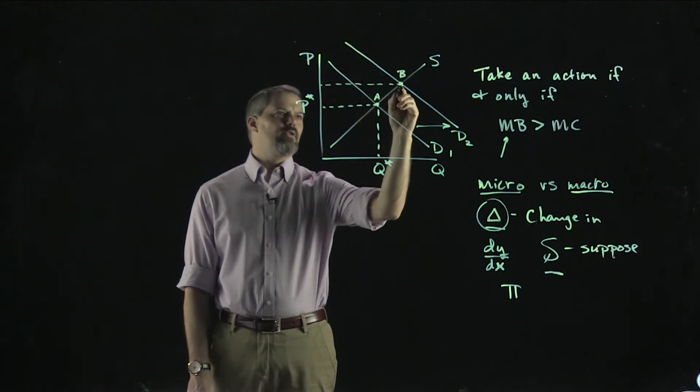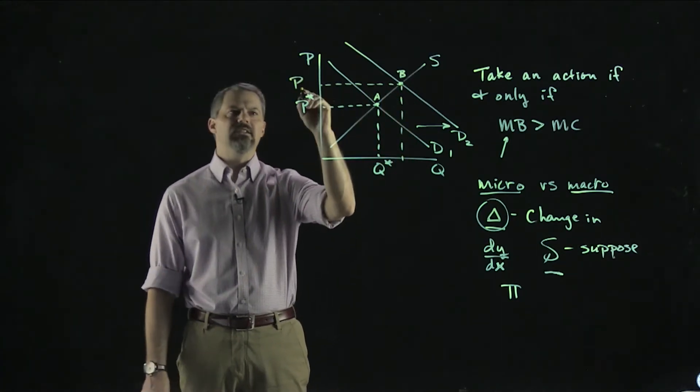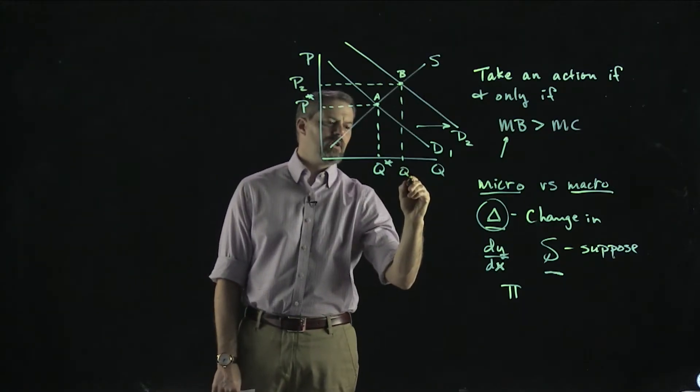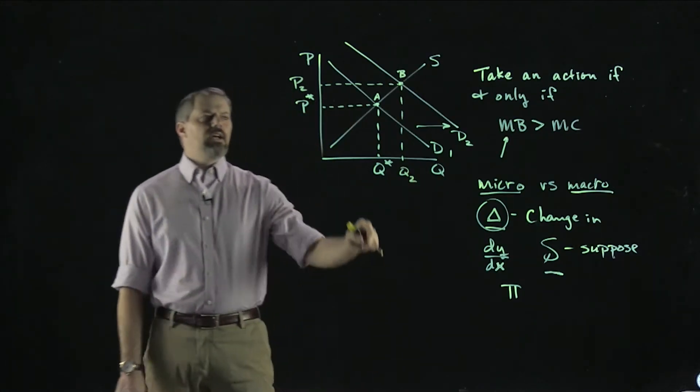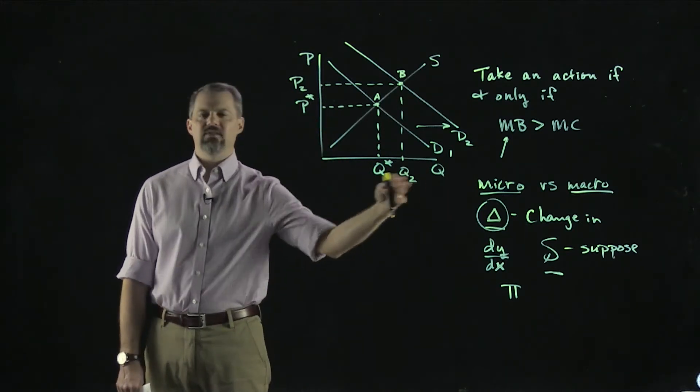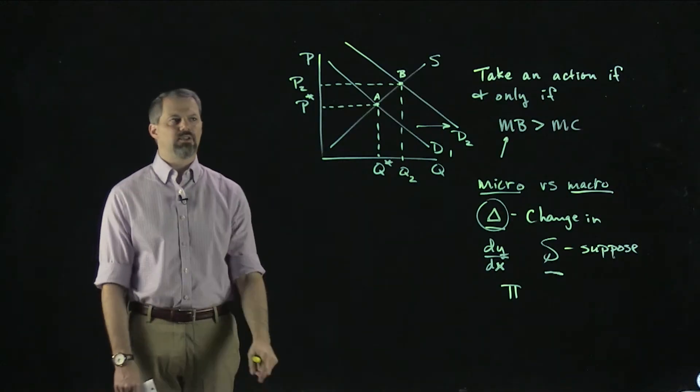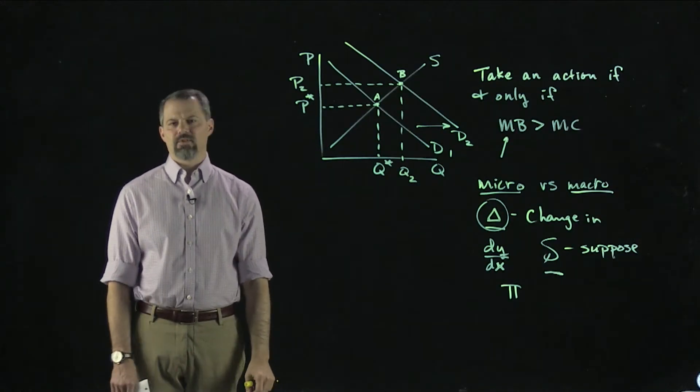That brings us from this initial equilibrium, which we could call A, up here to a new equilibrium, B. We get a new price and a new quantity—P2, Q2. This increase in demand drives up the market price. The equilibrium quantity increases. That's the analysis you would do in a principles of micro class.